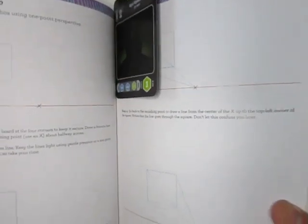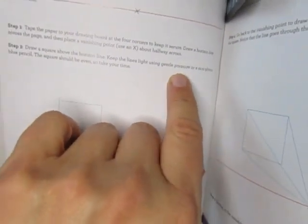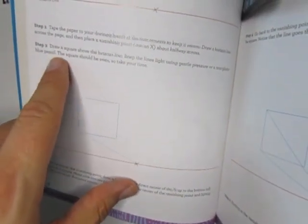Halfway across - this is pretty good, I already have the halfway point, I could use this as my vanishing point. All right, step two - draw a square above the horizon line. Keep the lines light using gentle pressure - keywords, gentle pressure - or a non-photo blue pencil. The square should be even, so take your time.